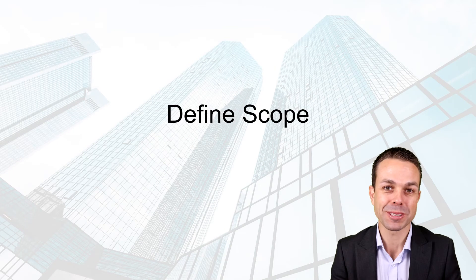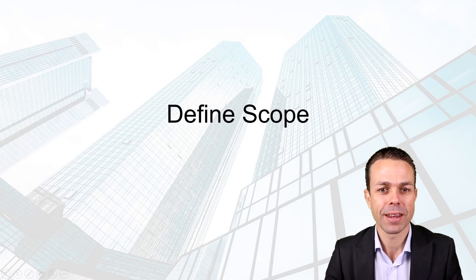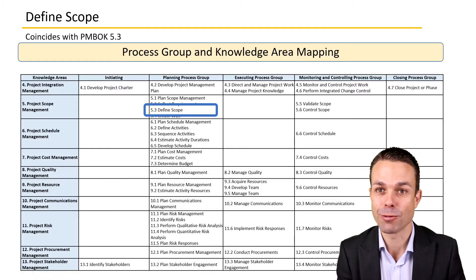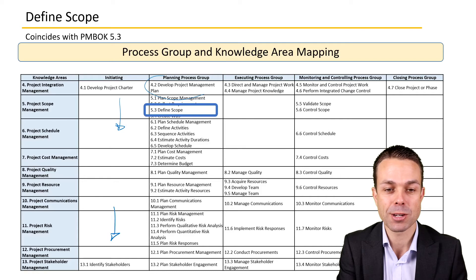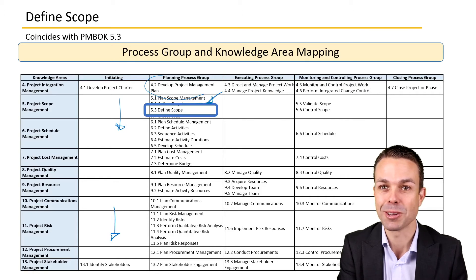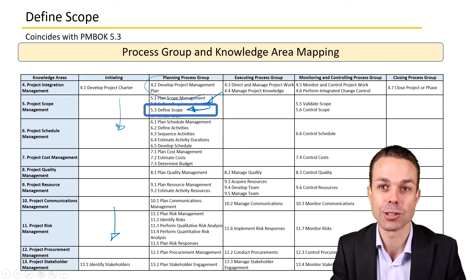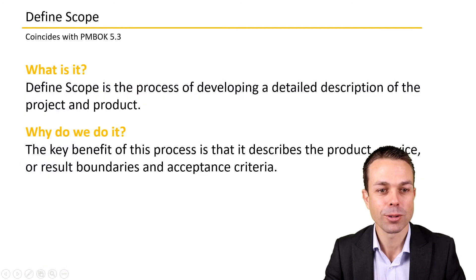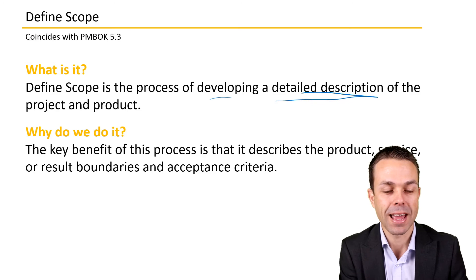Welcome back to the processes within the Project Management Body of Knowledge. This one in particular we're looking at is defining the scope. Where does defining scope sit in the overall PMBOK? We've been through initiating, identifying our stakeholders, developing our project management plan, collected requirements from our customers, and now from those requirements we're defining the scope we're going to be delivering. Defining the scope is the process of developing a detailed description of the project and the product.